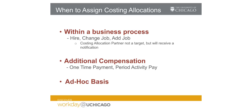In these cases the task will display as next up in the process or will appear in your inbox. Generally the HR partner or academic HR partner performing this business process will be responsible for assigning the costing allocations. Costing allocations can also be added and updated on an ad hoc basis. Now let's review a demo of assigning costing allocations in Workday.